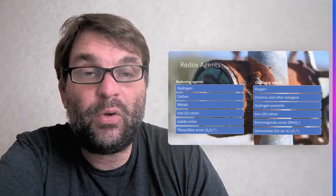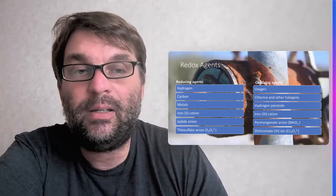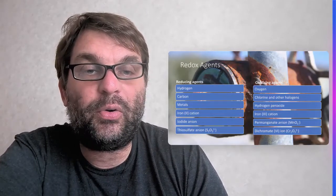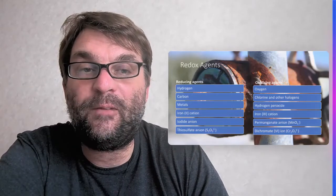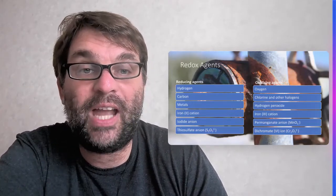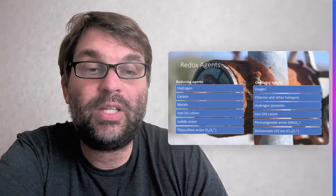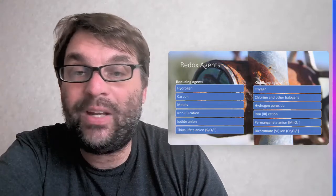For the oxidizing agents, we of course have oxygen. The halogens are very useful in terms of being oxidizing agents, if you're bleached. Hydrogen peroxide - great oxidizing agent. Iron 3 cation, the purple permanganate anion - very good disinfectant because it's such a great oxidizing agent, and dichromate anion, Cr2O7^2-, also a great oxidizing agent.